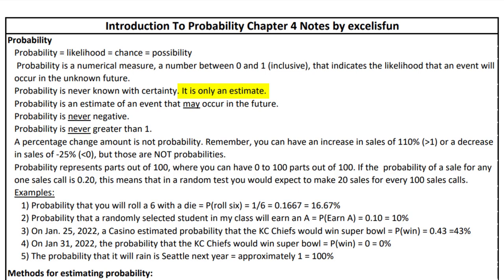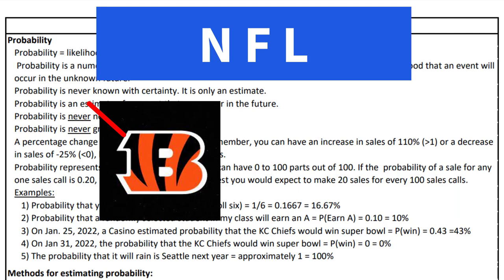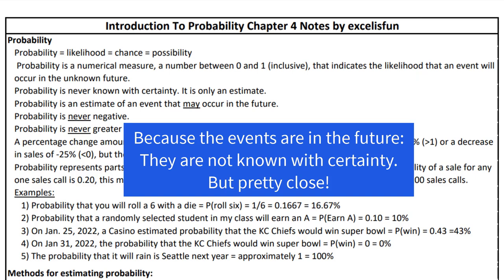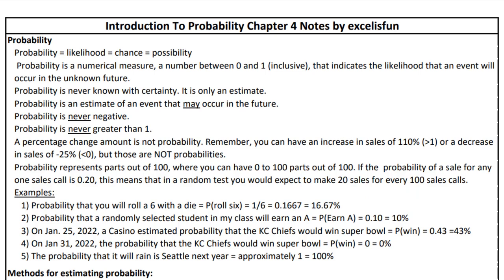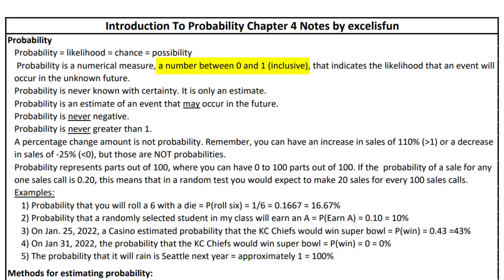There are two situations when it's not an estimate. The probability that KC will win the Super Bowl is 0 — if it really is 0, that means it's certain. Same with the rain in Seattle. But because those events are in the future, they're not known with certainty. Probability is never negative and never greater than 1. On tests, someone will give a negative number or a number bigger than 1 — don't do it. If you get that, the calculation is not correct.